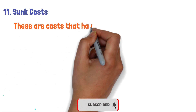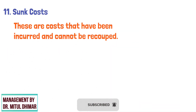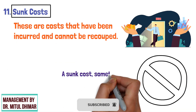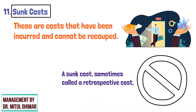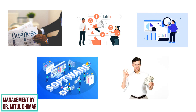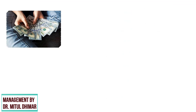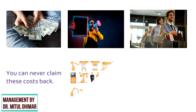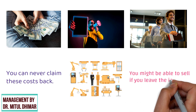Number 11: Sunk Cost. These are costs that have been incurred and cannot be recovered. If you left the industry, you could not reclaim sunk costs. A sunk cost, sometimes called a retrospective cost, refers to an investment already incurred that can't be recovered. Examples of sunk costs in business include marketing, research, new software installation or equipment, salaries and benefits, etc. For example, if you spend money on advertising to enter an industry, you can never claim those costs back. But if you buy a machine, you might be able to sell it if you leave the industry.